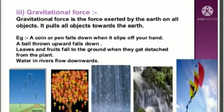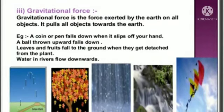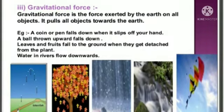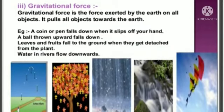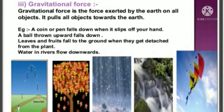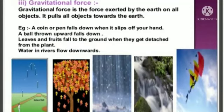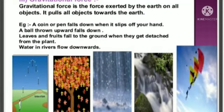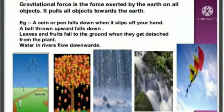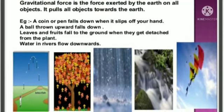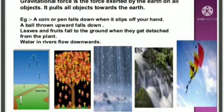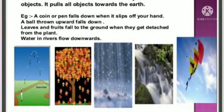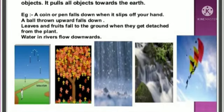Gravitational force is the force exerted by the Earth on all objects — it pulls all objects towards the Earth. Examples: a coin or pen falls to the ground when it slips from our hand; a ball thrown upward falls back down; leaves and fruits fall to the ground when they detach from a plant; and water in rivers flows downwards — all due to gravitational force.